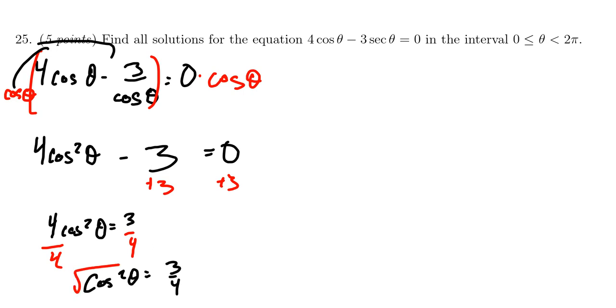And now take the square root of both sides. Now notice when you take the square root, you have to consider positive and negative. There's two possibilities there. So we get cosine theta is equal to plus or minus the square root of 3 over 4. Now this is probably not the one you're used to.